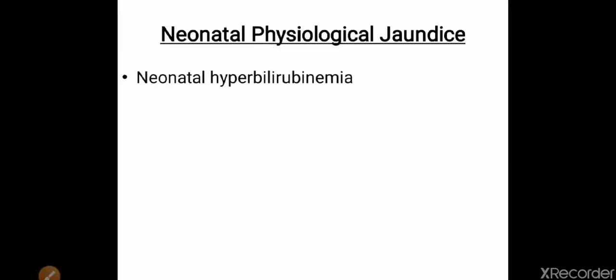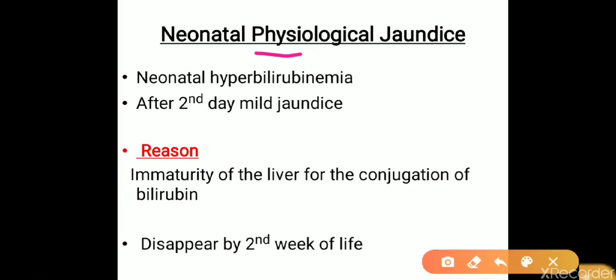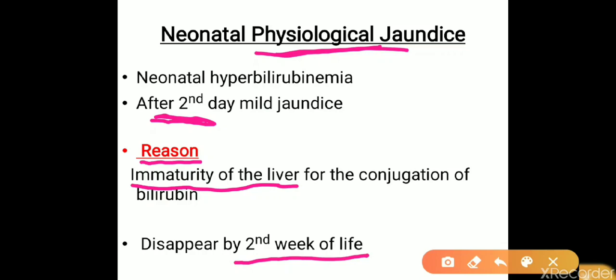The last topic is physiological jaundice of the newborn. As the name implies, it is physiological — not related to any disease. To differentiate from pathological jaundice: in pathological jaundice, the baby is born with jaundice, whereas in physiological jaundice, jaundice develops after delivery — usually on the second or third day of life. The reason is immaturity of the liver for conjugation of bilirubin. It usually disappears by the second week of life and does not require treatment.